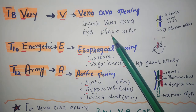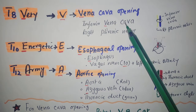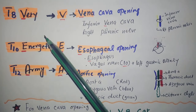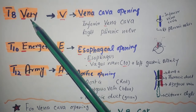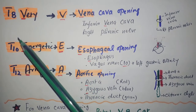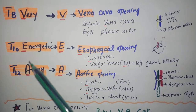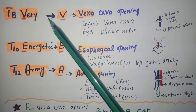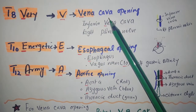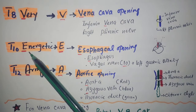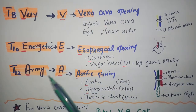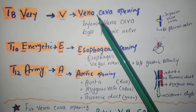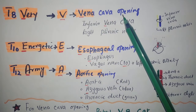The aperture or opening in the diaphragm — the mnemonic here is 'Very Energetic Army,' starting at T8, then T10 and T12. V is for vena caval opening, E is for esophageal opening, and A is for aortic opening.